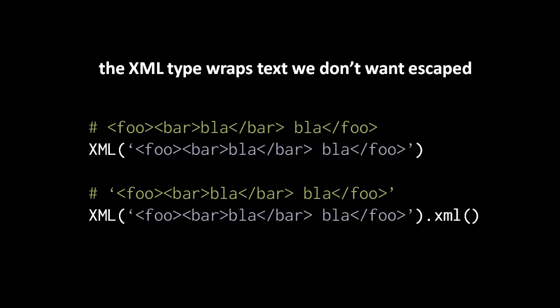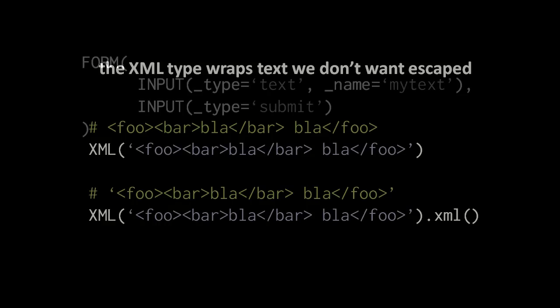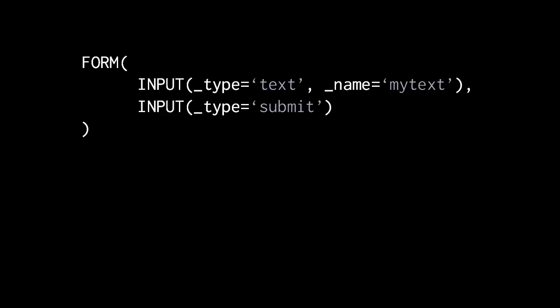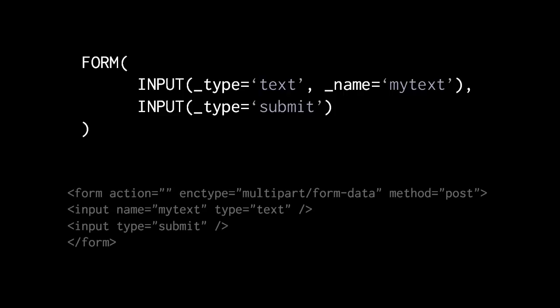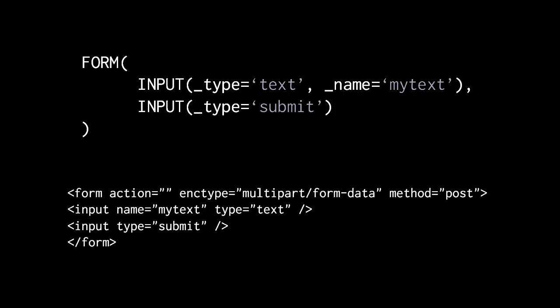Another justification for these HTML helpers is that in some cases, like with form, these helper objects provide extra intelligent behavior. Consider creating a form and giving it two inputs: the first with type text and name my_text, and the second with type submit. When we get the HTML string using the XML method, we get a form with those two input tags — but notice the form is automatically given certain default attributes, such as enctype with the value multipart/form-data, which specifies how the form data gets encoded when posted.